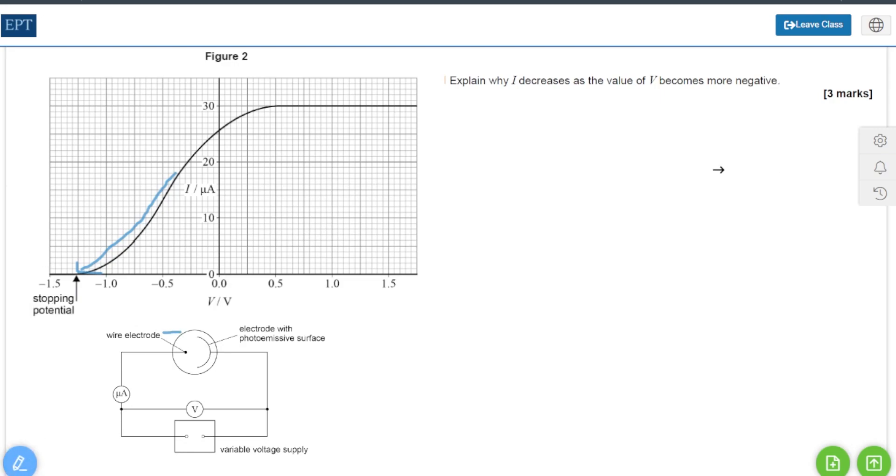Once again this depends on the fact that our electrons are being emitted with a range of kinetic energies. So here is one with a lot of kinetic energy and one with not so much.